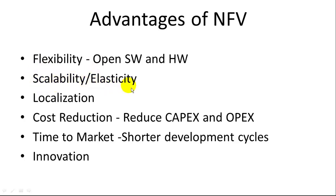So it's much more scalable and elastic, depending on whether your need for capacity is going up or down in your data center. You can localize these network functions now — you can move them to exactly where the workload is within the data center, not just wherever you have space. Cost reduction: you reduce your capital expenditure and your operating expenditure. You're not pouring out money up front for a new piece of equipment, and operating expenses should be lower using virtualized network functions.